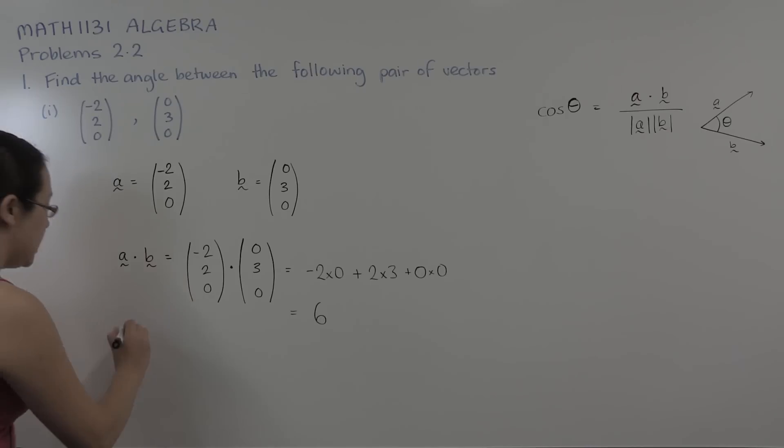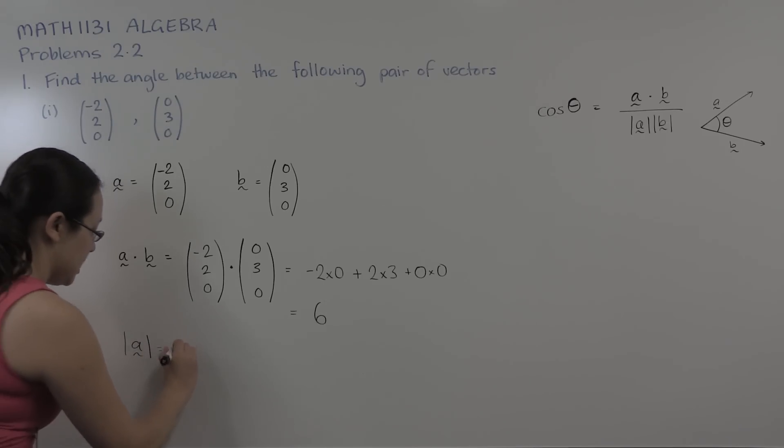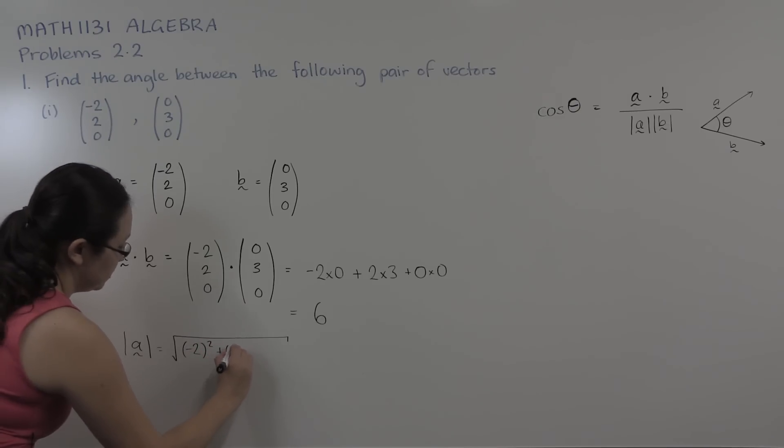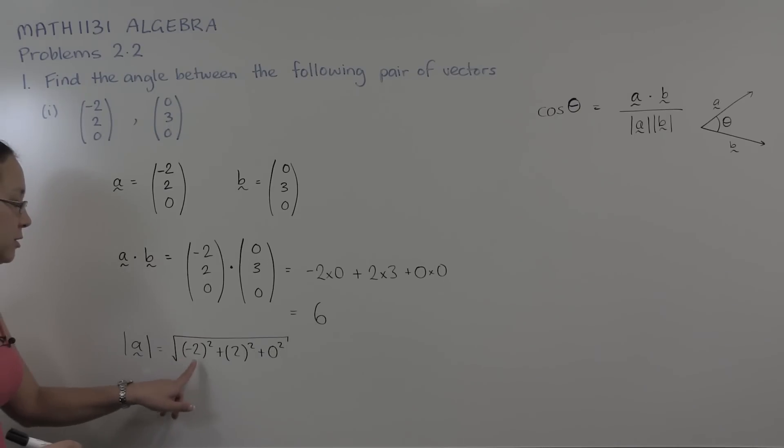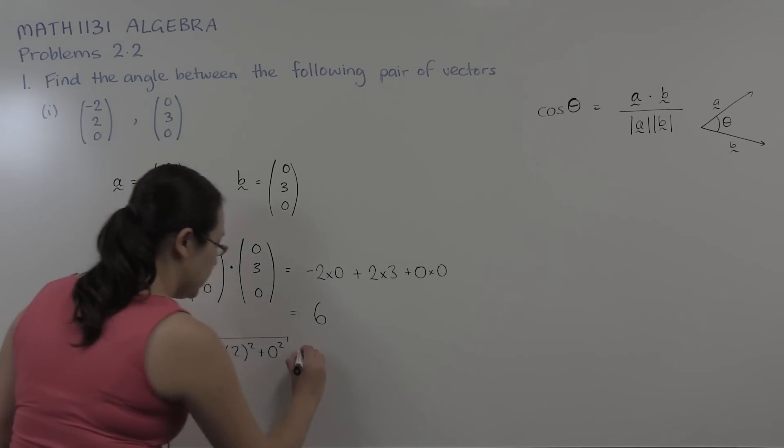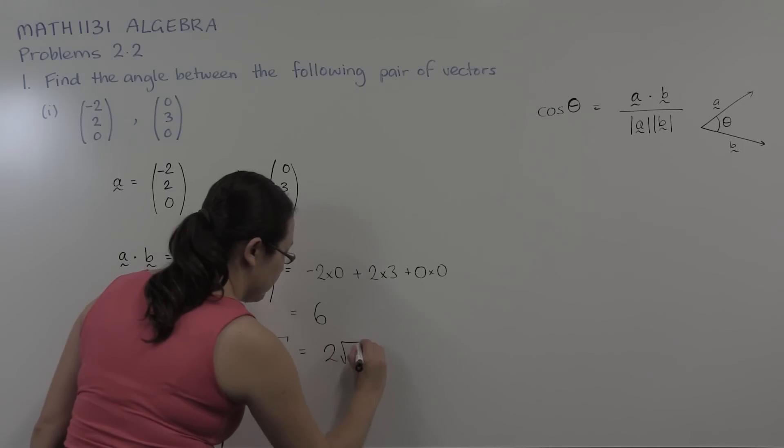Now we also need the length of vector a. We can calculate the length of vector a. It's the square root of the sum of the squares of each of the components of a. So in this case, the square root of four plus four, that's the square root of eight or two square root two.